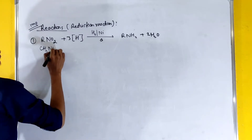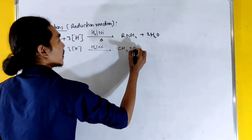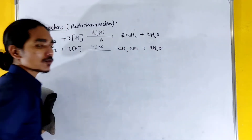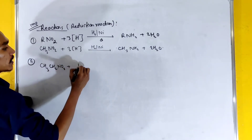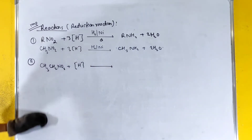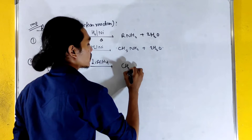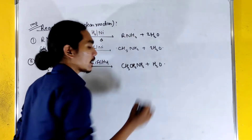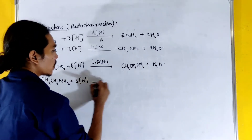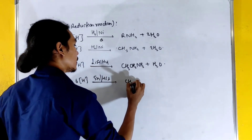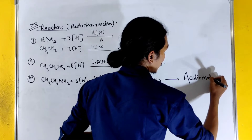For example, C6H5NO2 plus 3H2 with Ni gives C6H5NH2 — aniline, also called methylamine formation. Using LiAlH4 reduction: C6H5NO2 plus 3H2 with LiAlH4 gives amine formation. In acidic medium: C6H5NO2 plus 6H with Sn/HCl gives C6H5NH2 plus water.